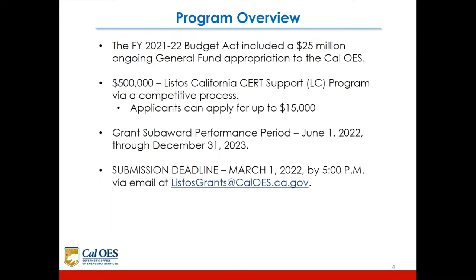The Fiscal Year 2021–22 Budget Act included a $25 million ongoing general fund appropriation to Cal OES, with $500,000 allocated to the Listos California CERT Support LC Program via competitive process. Applicants can apply for up to $15,000. The grant subaward performance period is from June 1, 2022 through December 31, 2023. The submission deadline is March 1, 2022 by 5 p.m. via email at listosgrants@caloes.ca.gov.